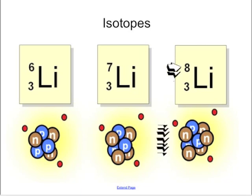So you look down at the drawing here. The only thing that's different is that this lithium has three neutrons, this lithium has four, and this lithium has five.